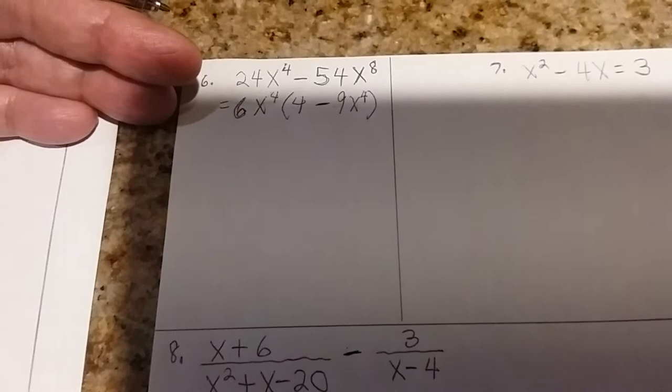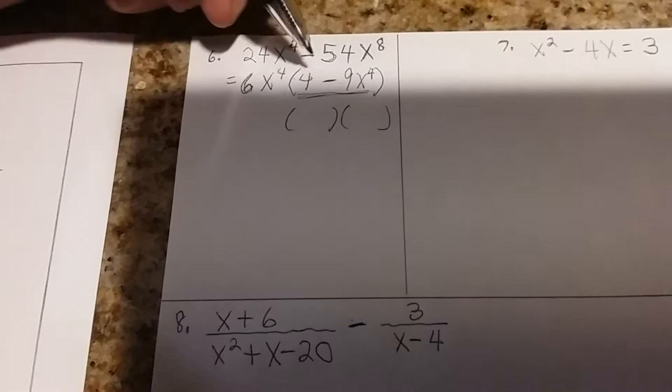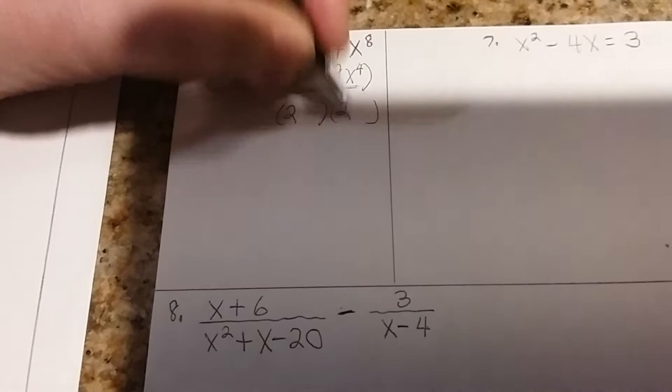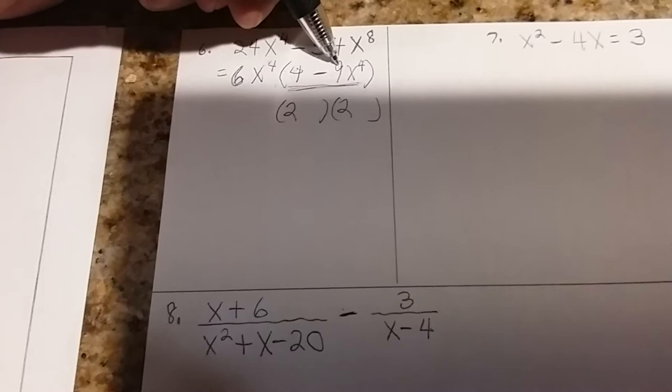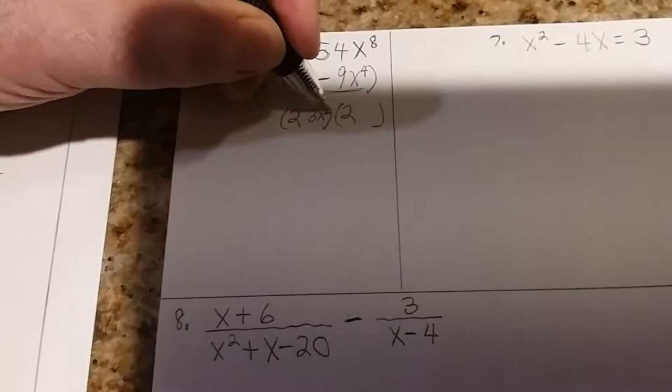The question says factor completely, so you have to check to see if you could factor some more. And if you look right here, where I'm underlining, that's a difference of two squares. Remember that? So we're going to factor that with two parentheses. The first part is two and two because two times two is four. Now here you may see the answer right away, 3x squared. If not, just think of it as nine. Three times three. And x4 would be x2 times x2. When you add the exponents, you get x4. So it's 3x2. Same thing here.